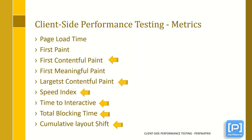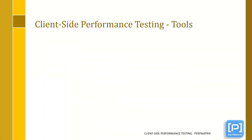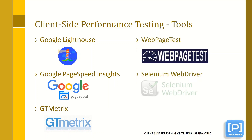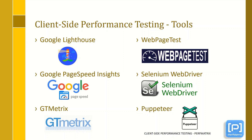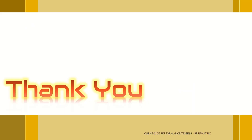Until then, you can refer to the UI performance testing tutorial at the Power of Metrics website — the link is given in the description. Some famous client-side performance testing tools include Google Lighthouse, Google PageSpeed Insights, GTmetrix, WebPageTest, Selenium WebDriver, and Puppeteer. Just for your information, Google Lighthouse functionality is built into the Google Chrome browser, so you can use it at a small level to get the performance of the current page.